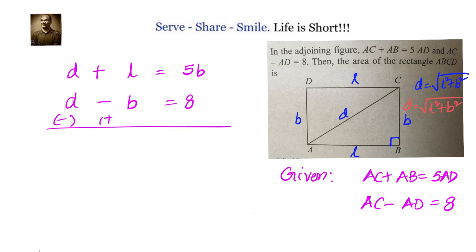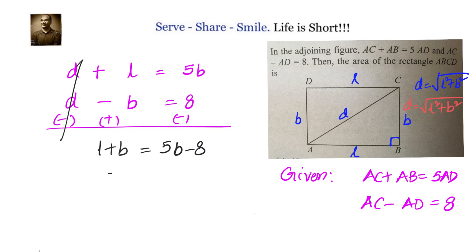Now let's subtract these two equations to get a relation between L and B. When we do that we get L plus B equals 5B minus 8, which gives us L equals 4B minus 8. Now we have the relation between length and breadth.